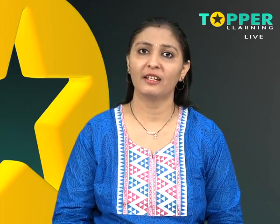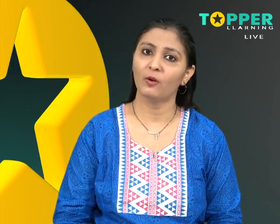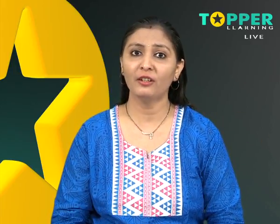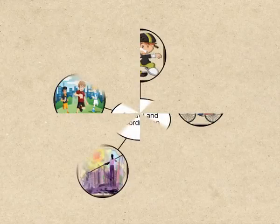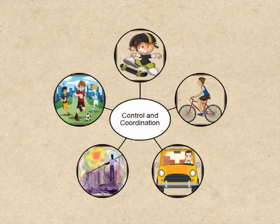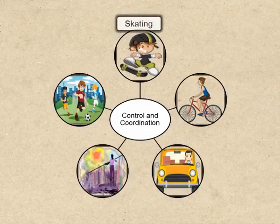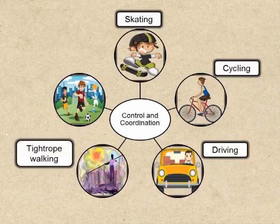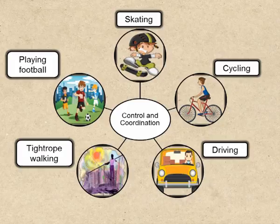Control and coordination together result in the proper growth and development of an organism. Here is a small task for you — think of all possible examples from your day to day life where you observe coordination. You observe coordination while skating, cycling, driving a car, tightrope walking, playing a football match, and so on.